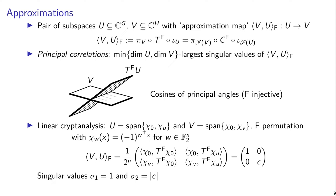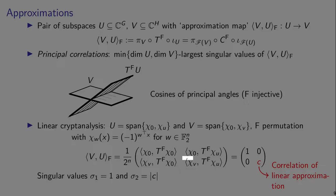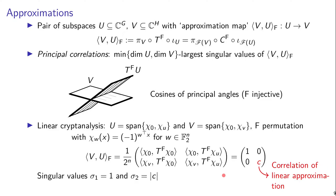The off-diagonal elements are zero because of the balancedness of linear functions, and the on-diagonal elements are 1 and c, some constant c. That means the singular values are 1 and the absolute value of c. And this c is the correlation of a linear approximation because it is equal to exactly the same expression as the correlation of that linear approximation.